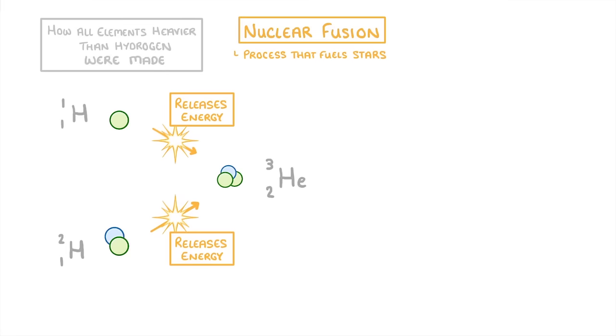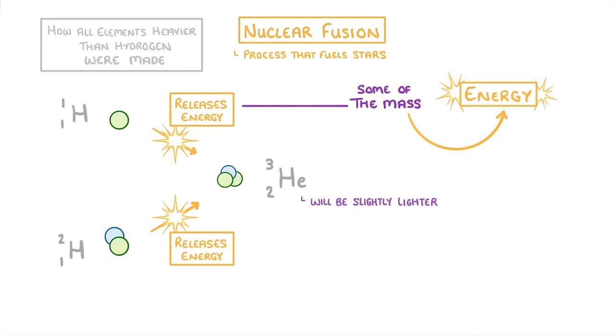The reason fusion produces such large amounts of energy is that some of the mass of the original nuclei, in this case those two hydrogens, is being converted to energy rather than transferred to the new helium nucleus. You can't tell this from looking at the mass numbers, but just trust us that the helium nuclei will be very slightly lighter than the total mass of the two hydrogen nuclei.